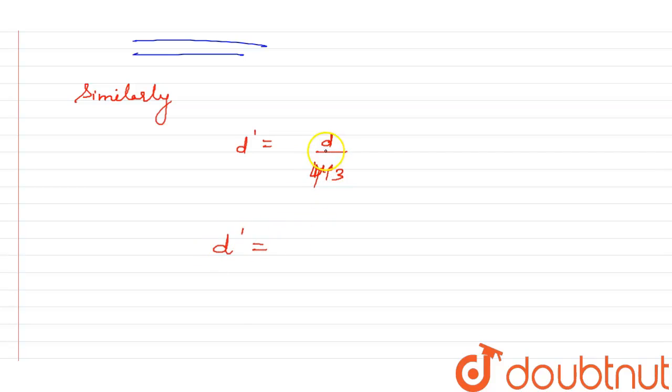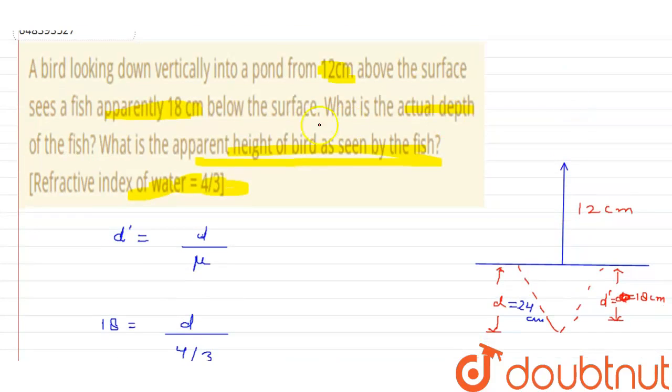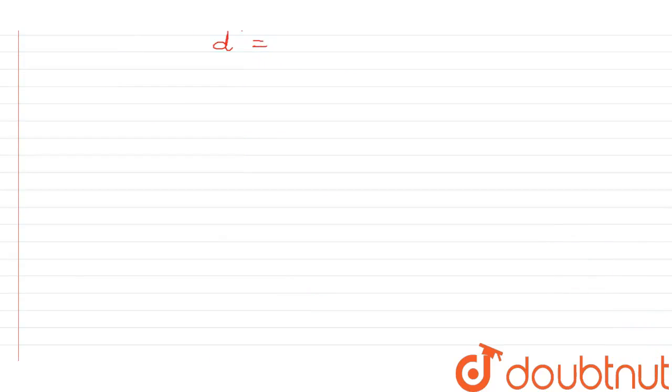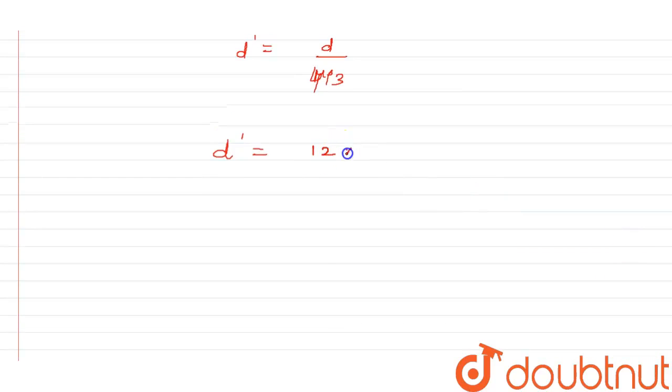d' is what we need to find. The value of d is already mentioned to me - that is 12 centimeters. What is the apparent height? The actual is given as 12 centimeters. We have to calculate the apparent height, which means we have to get d'.